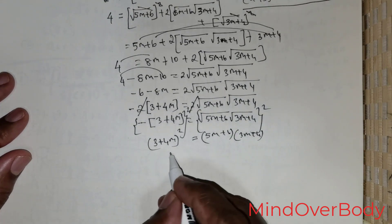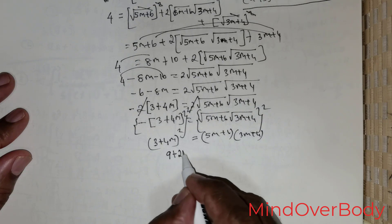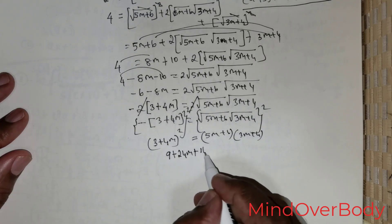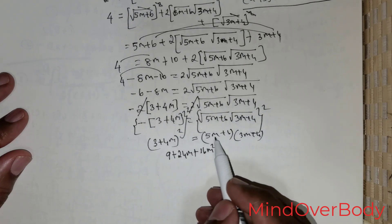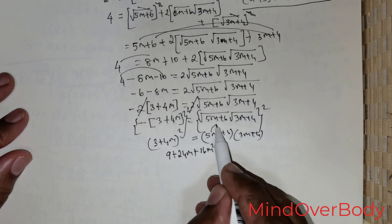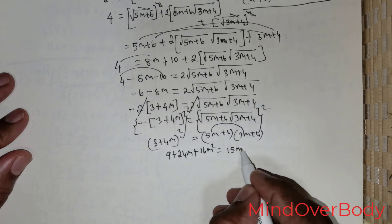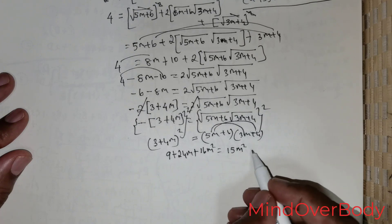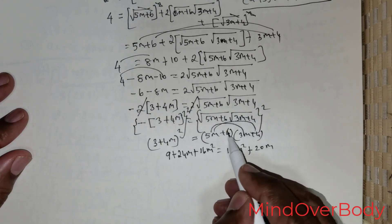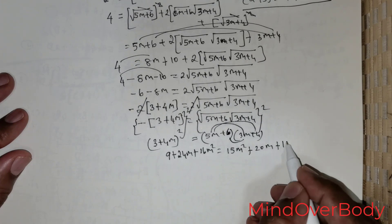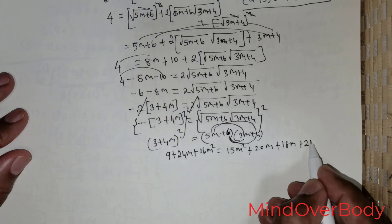Expanding the left side I get: 9, plus 4 times 3 is 12, so 12 times 2 is 24m, plus the square of 4m is 16m squared. Now the distributive property comes in for the right side: 5m times 3m gives 15m squared; 5m times 4 gives 20m; 6 times 3m gives 18m; and 6 times 4 gives 24.